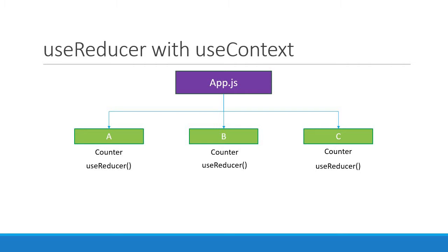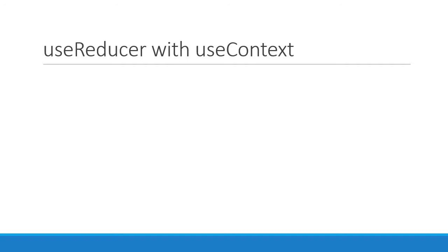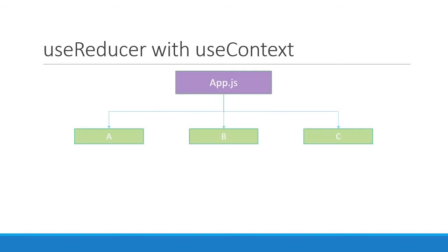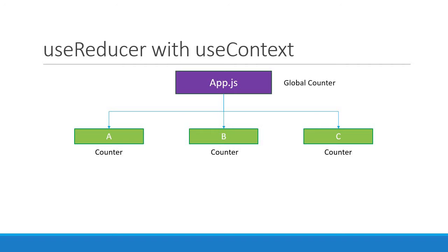Now in a different application you might have a slightly different requirement. The three components — A, B, and C — all need to implement a counter, but this time they need to share the counter value. So instead of implementing three different counters, we need to implement one counter that is accessible by all three components. If you are comfortable with the basics of React, it might seem obvious: implement a global counter in app.js and pass methods as props to the three components. The components can then have handlers that call the props — pretty straightforward.